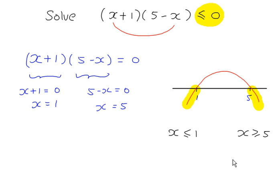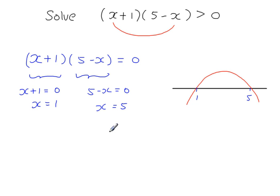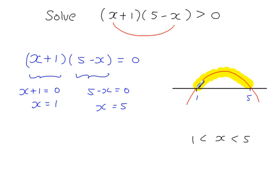I'm going to modify the problem slightly. If the inequality said greater than 0 instead, all the earlier steps remain the same. At the final step, you need the portion of the curve above the line, which is a single continuous region. The answer is x is greater than minus 1 and x is less than 5 — not including minus 1 or 5. Writing it with an equals sign would be wrong; since there's no equals in the inequality, there should be none in the solution either.